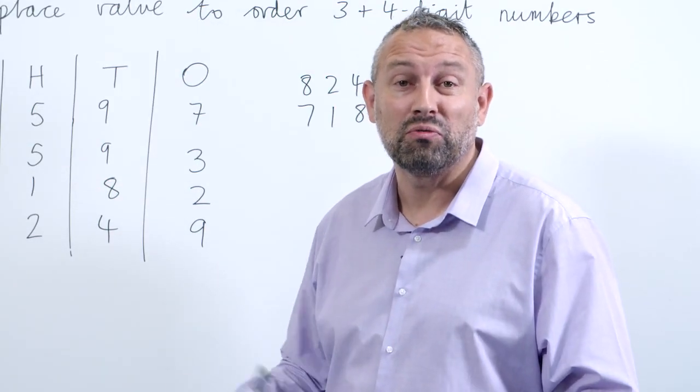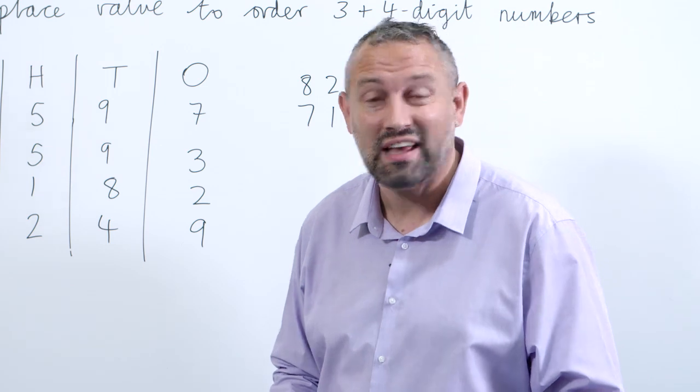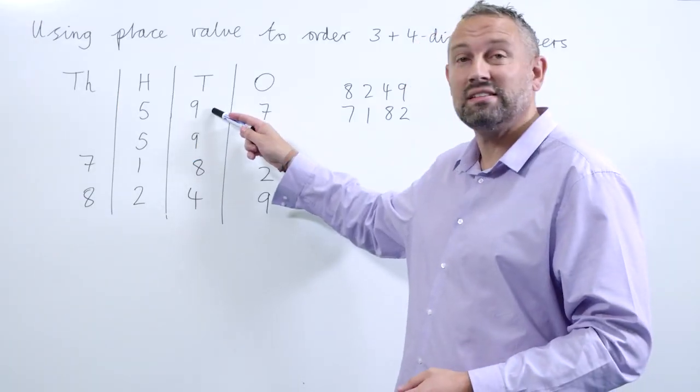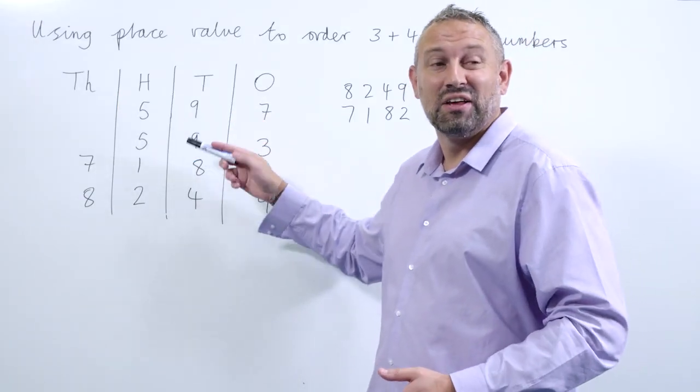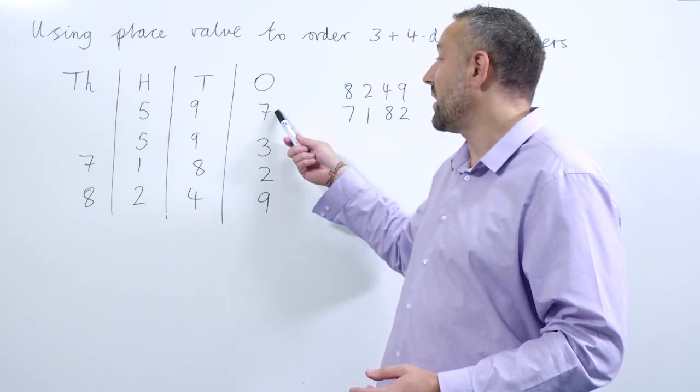So now we have to apply the same rule and move to the right into the next column, which is the tens. Here we have nine tens and nine tens, so we have to move again to the right.